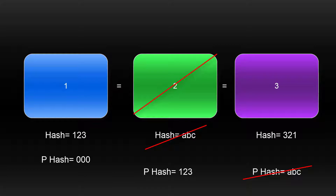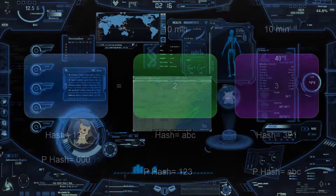However, this in itself doesn't actually make things secure, because as computers get faster they can easily recalculate hashes to make tampered information appear valid. This is why blocks have something called proof of work — basically an artificial time limit. With bitcoin, proof of work means it takes about 10 minutes for a new block to be made, which slows things down considerably.